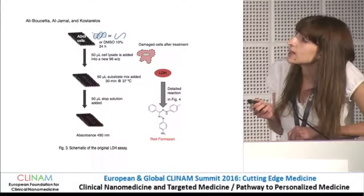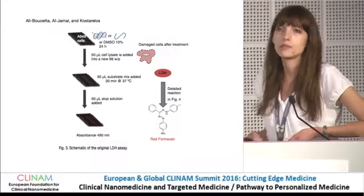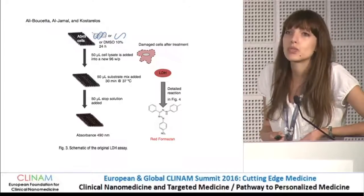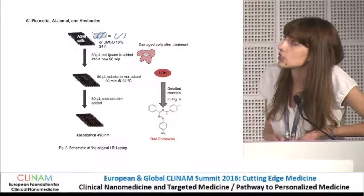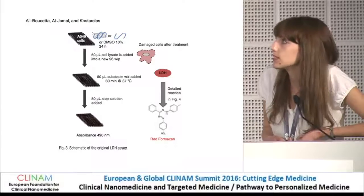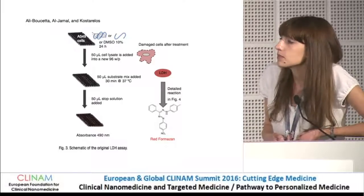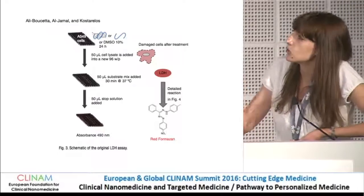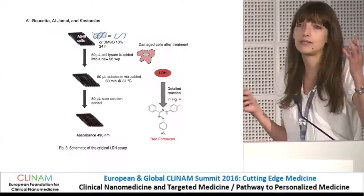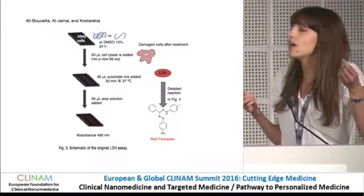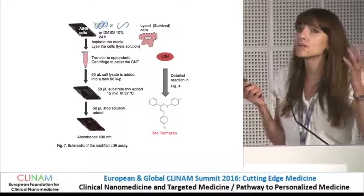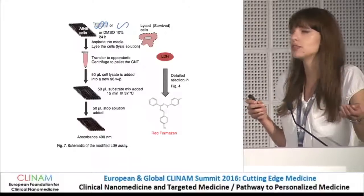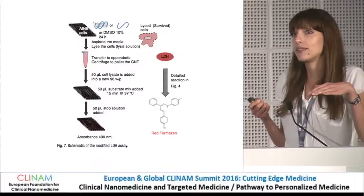The original LDH assay has been used with non-carbon-based materials and works fine, but when it comes to carbon-based materials such as carbon nanotubes and graphene, some interferences were observed. So it is actually an indirect method. In the direct method you measure what dead cells release into the supernatant. However, in the modified one, you remove the supernatant, and then analyze the cells that remained on the support.